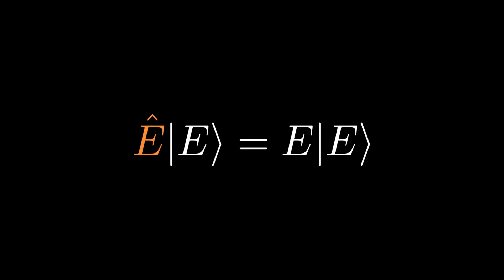Consider the equation E hat on ket E equals to e ket E, where E hat is the linear operator representing the energy observable. Ket E is a definite state of energy conveniently labeled by e, the energy of the definite state, which is a real number. This is a rather confusing notation, thus we change to a clearer notation with discrete spectrum.